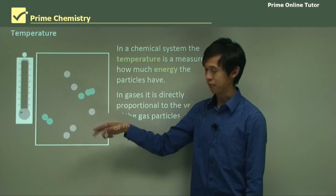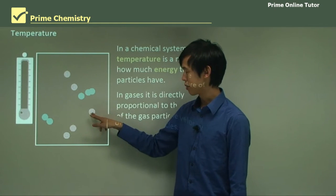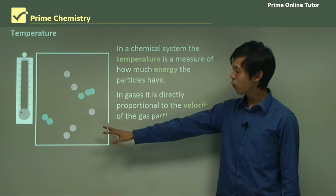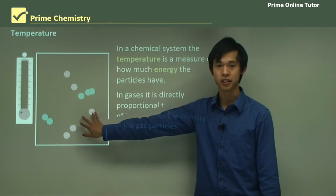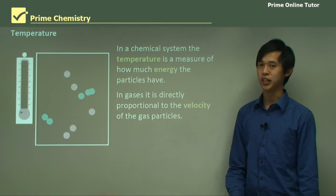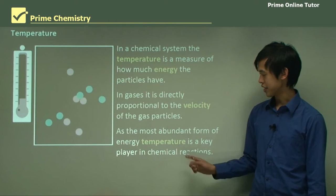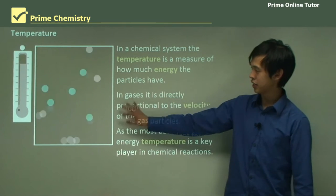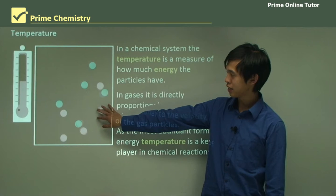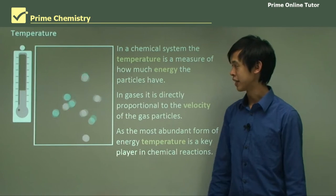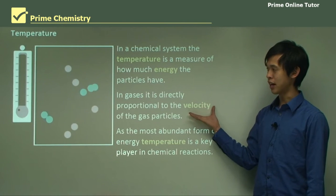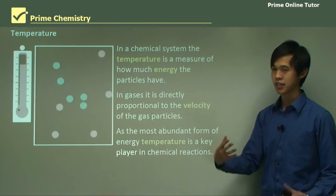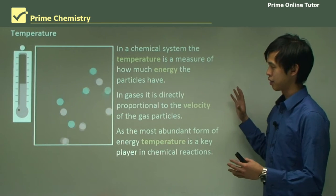If this was a gas, the temperature would tell you on average how fast each of these particles is going. If you do the calculations, you get somewhere on the order of about 500 meters per second — so they're moving really, really quickly. As the most abundant form of energy, temperature is a key player in chemical reactions. You can see in this animation they're moving slowly at low temperature, and as the temperature increases, they start to move much more rapidly. As the temperature goes up, the velocity increases as well.